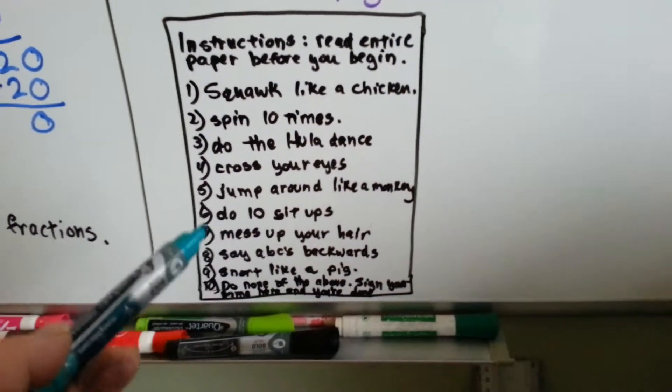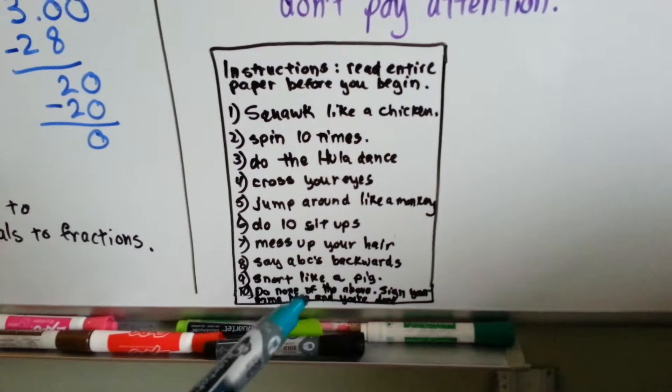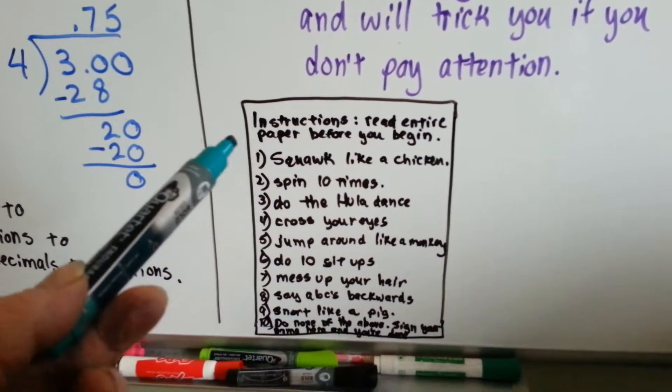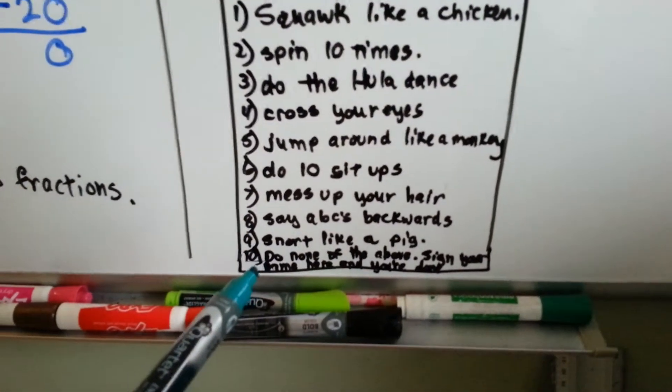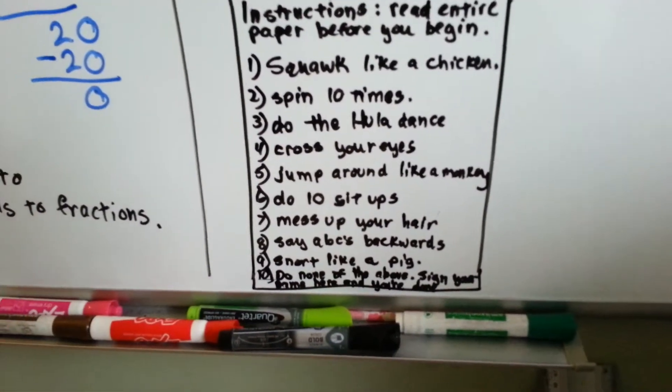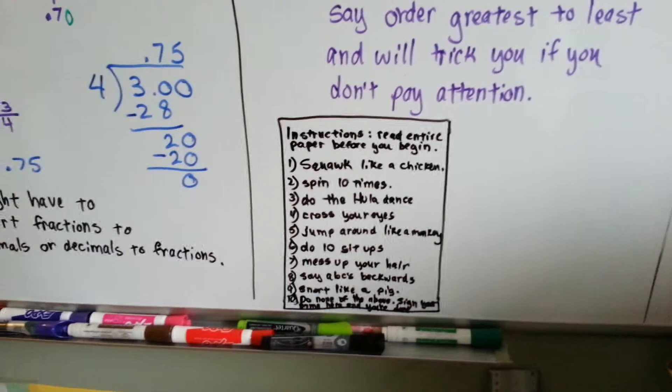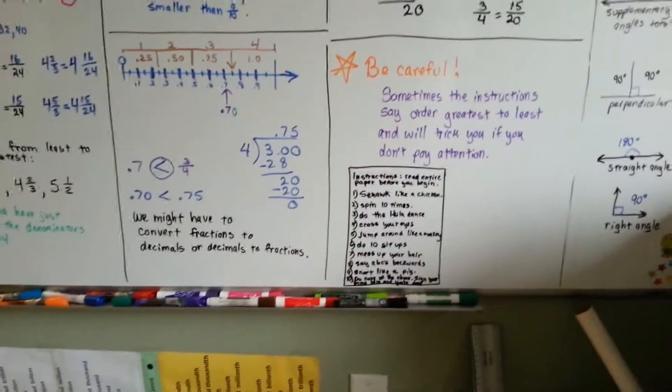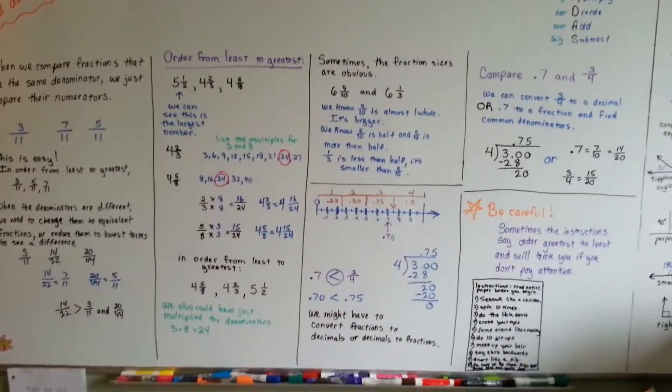They'll do the sit-ups, they'll mess up their hair, they'll say the ABCs backwards, snort like a pig, and then they read the last one. The other person will read the instructions and it says read the entire paper before you begin. And at the very bottom it says do none of the above, sign your name to the paper and you're done. And here the other person didn't read the instructions and they're jumping around like a monkey. So, always read the instructions. I bet you could find that on the internet if you looked for it. It's pretty funny. It makes fun of people who don't read instructions.